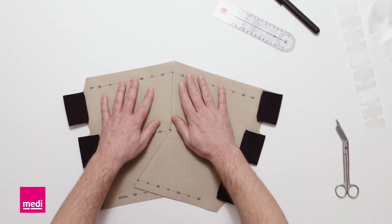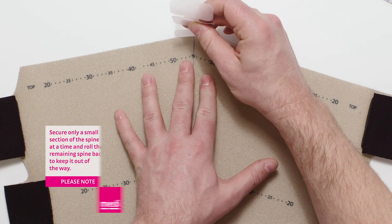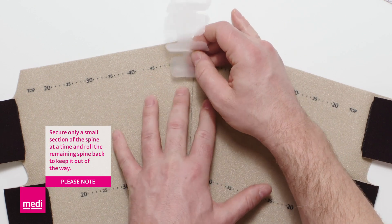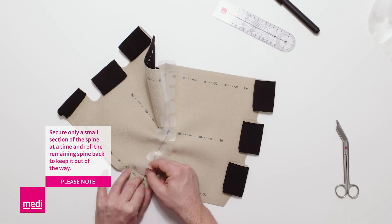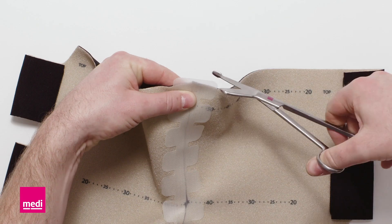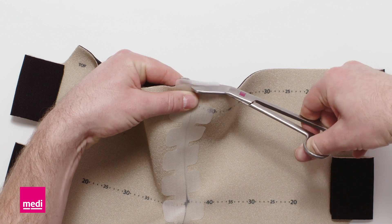Align both components precisely without overlapping. Place the spine in the middle and connect the two components. Trim off excess material of the spine.